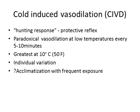Cold-induced vasodilation is a protective reflex against the development of frostbite, also known as the hunting response. Paradoxical peripheral vasodilation occurs at low temperatures every 5 to 10 minutes, allowing blood flow to the extremities and their warming. It is strongest when extremity temperature falls to 10 degrees Celsius, and there is considerable individual variation in this reflex.